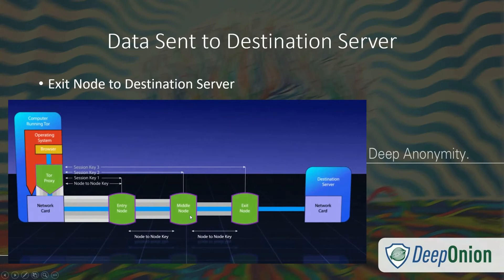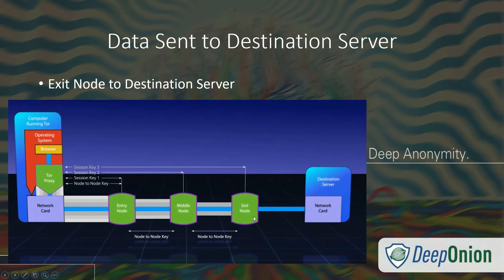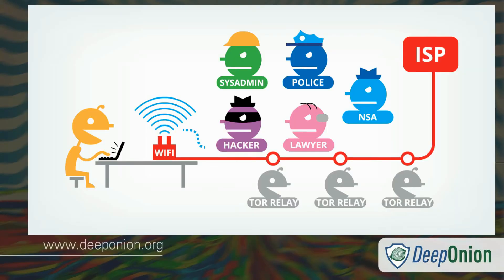The exit node then sends a request to the destination. Because all the data is encrypted on an individual node layer, the middle node is only aware that data is coming from the entry node and going to the exit node. The entry node only knows data is coming from your computer going to the middle node. The exit node is only aware of the destination and the middle node, but not where the data originates. Each node only knows one before and one after, with no clear picture of the whole network, and all data is encrypted at every step in an onion format.